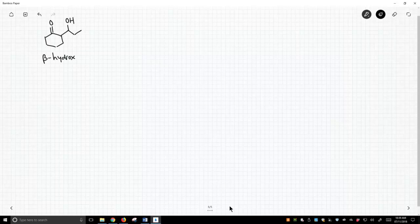It is a beta-hydroxy ketone. So there's our alpha carbon and our beta carbon. How would we make this compound? We're going to use an aldol reaction to do it.